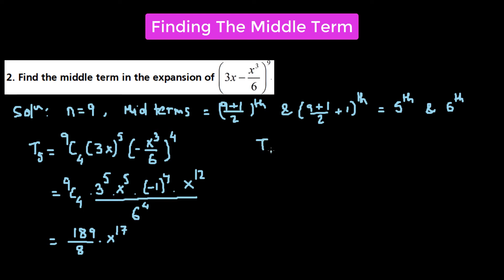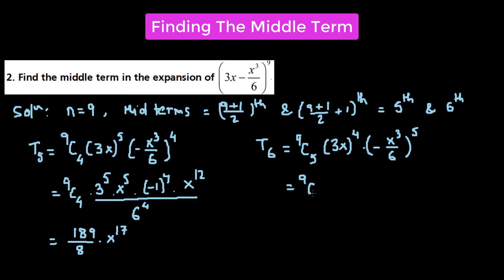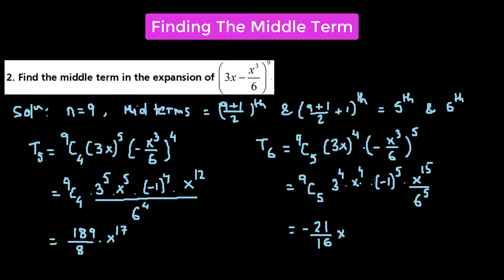For T6: 9C5 times the first term raised to the power of 9 minus 5 = 4, times (−x³/6) raised to the power of 5, which equals 9C5 times 3⁴ times x⁴ times (−1)⁵ times x¹⁵, divided by 6⁵. Since (−1)⁵ gives a negative 1, and the constant coefficients give us 21/16, we have T6 = −(21/16)x^(4+15) = −(21/16)x¹⁹. These are the two middle terms.